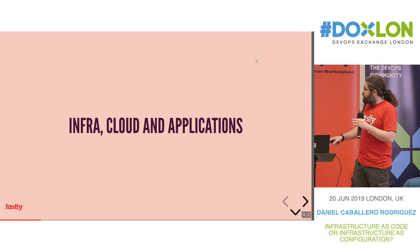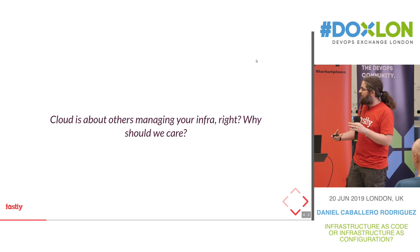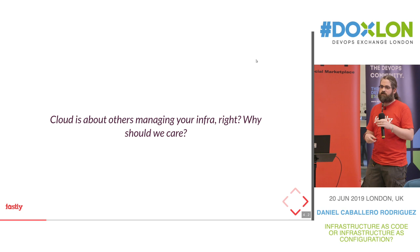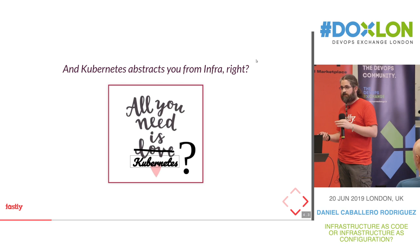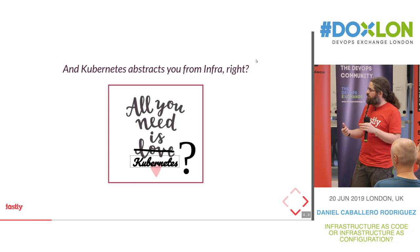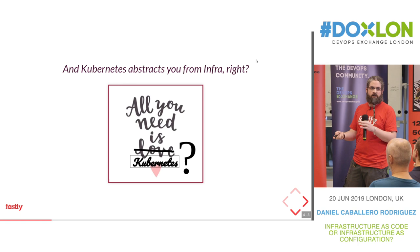Why are we talking about infrastructure management when everyone is just using cloud? Someone else is managing your infrastructure — why should you care? Also, we have seen in previous talks that Kubernetes is now a very common choice to deploy and run your applications. Kubernetes is about abstracting your actual infrastructure. So why do you need to care about Infrastructure as Code?